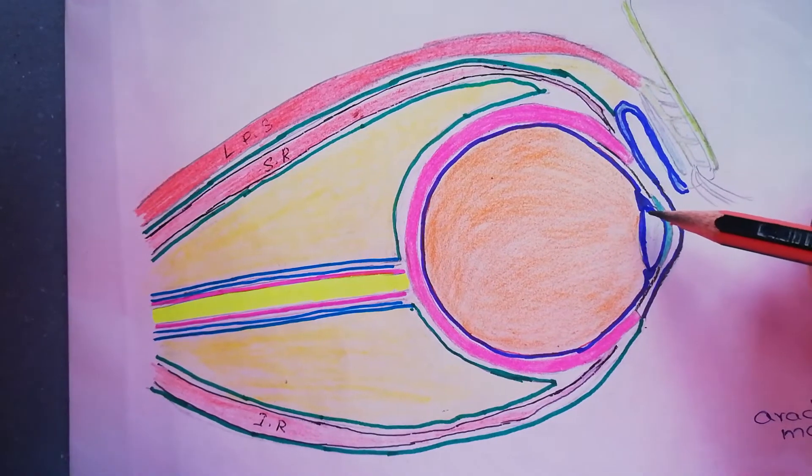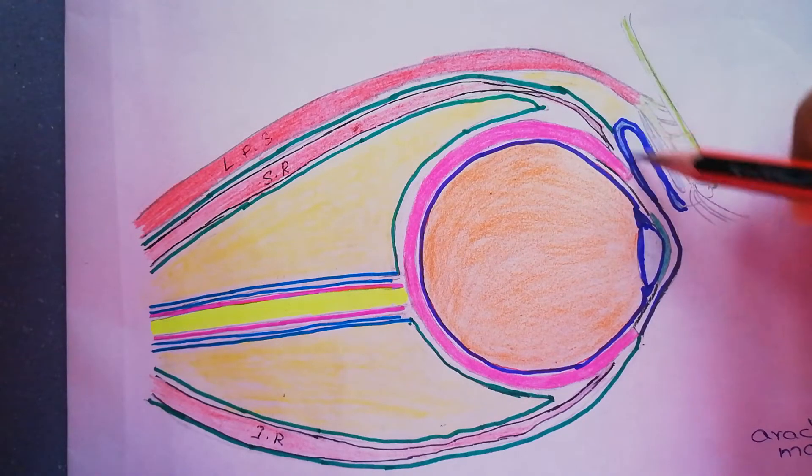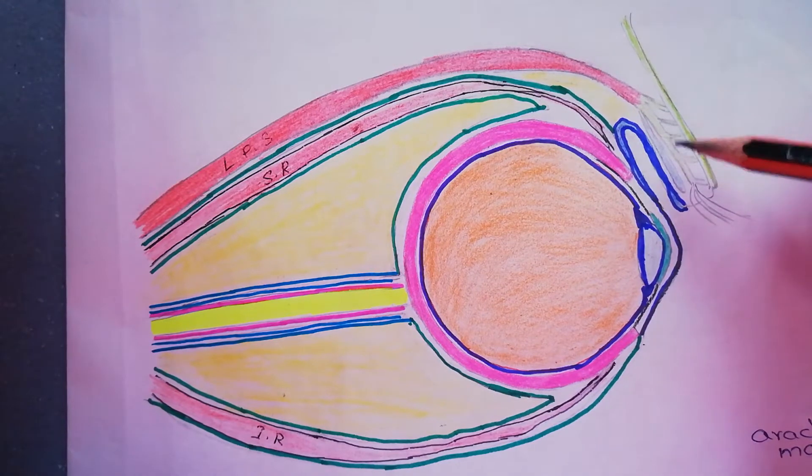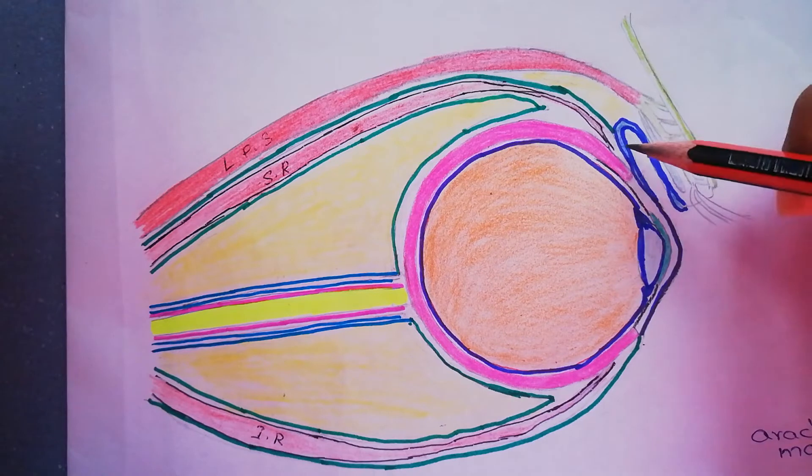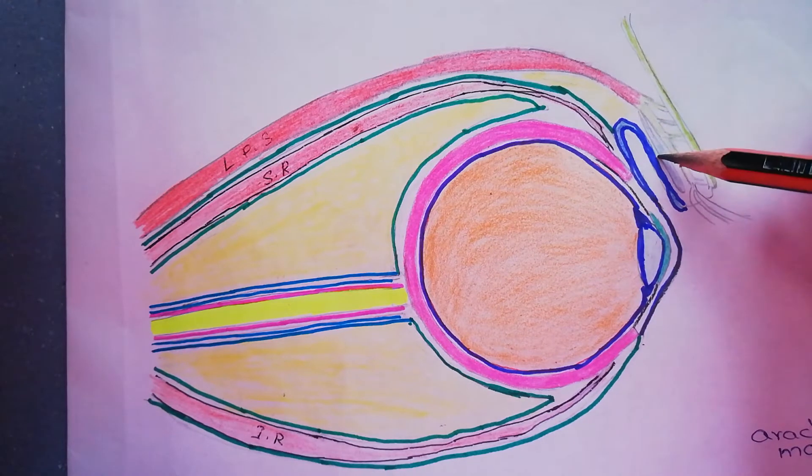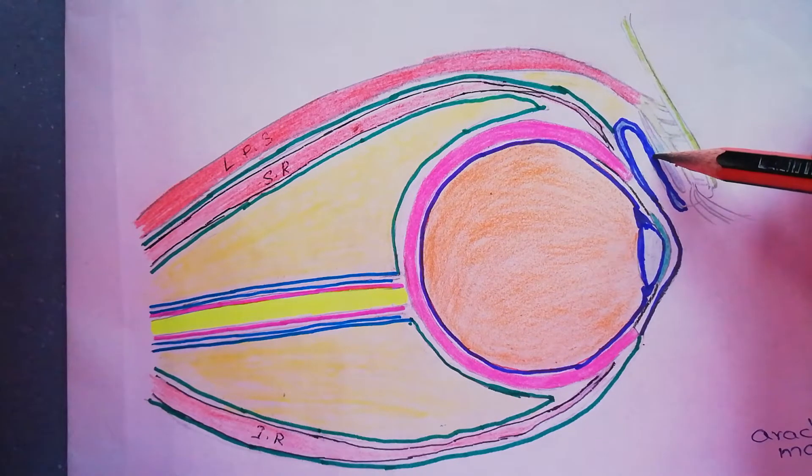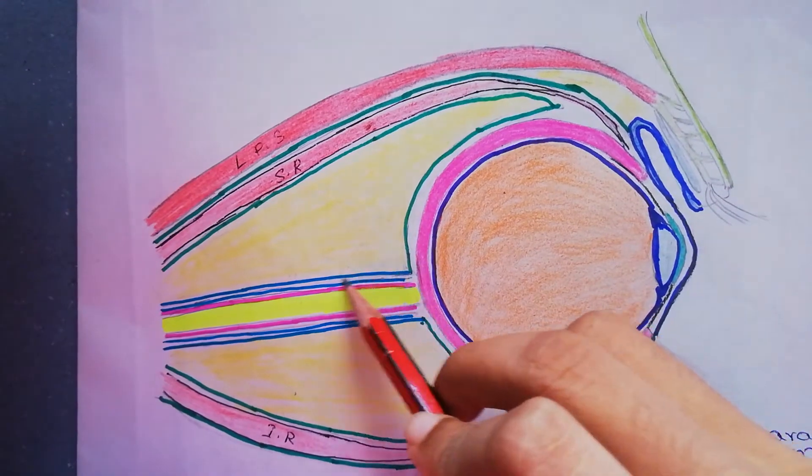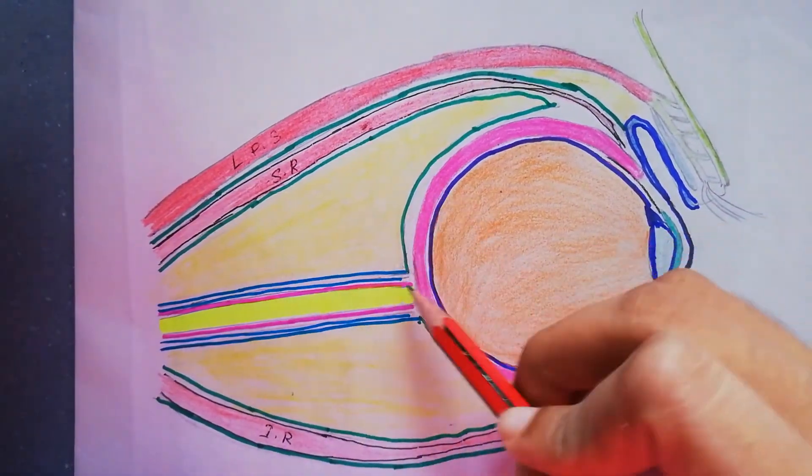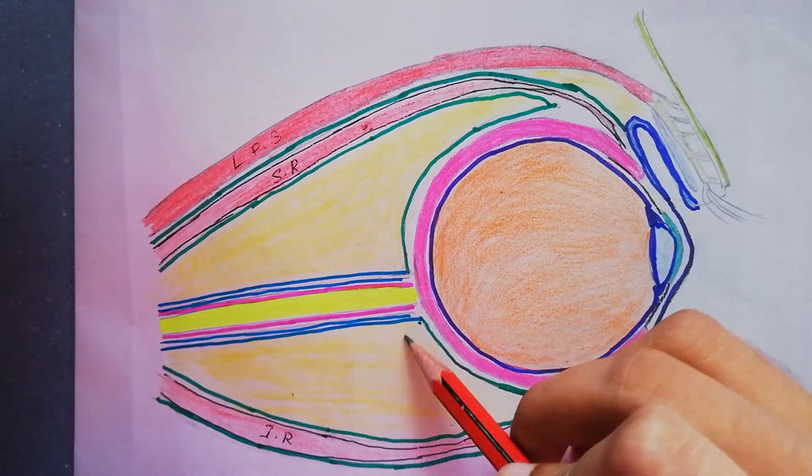The anterior margin of the sheath fuses with the conjunctiva. You know that this is the eyelid and this is the bulbar conjunctiva and this is the palpebral conjunctiva. Posteriorly, the sheath fuses with the dural sheath of the optic nerve.